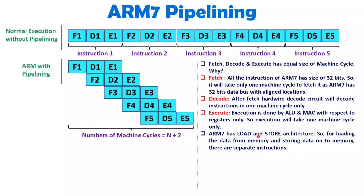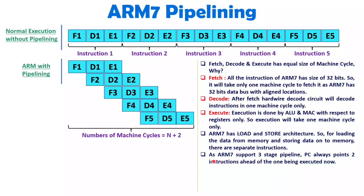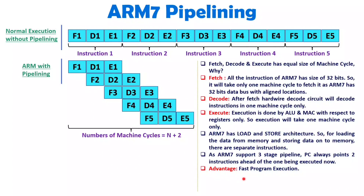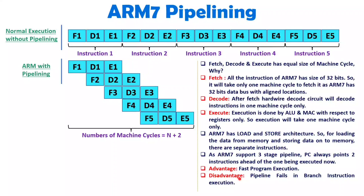ARM7 supports three-stage pipelining, so you will observe the program counter will always point two instructions ahead of the one being executed now. It will always be two instructions ahead — the reason is we have a three-stage pipeline. The advantage is that it is fast in execution, but the disadvantage is regarding branch instruction execution.